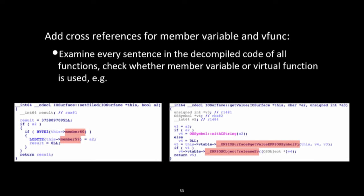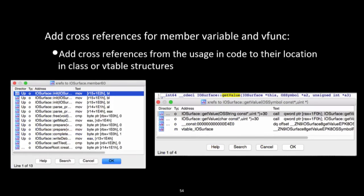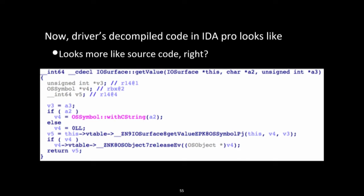Next, RilK extends cross-references for member variables and virtual functions. We examine every statement in the decompiled code of all functions, check whether any member variable or virtual function is used, and then add cross-references in IDA Pro from those usages to the member variable or virtual function locations in their class or vtable structures. Now the decompiled code looks much more like source code.